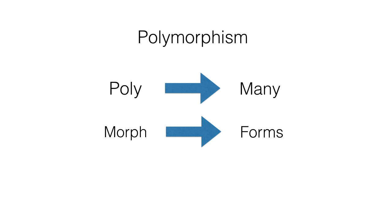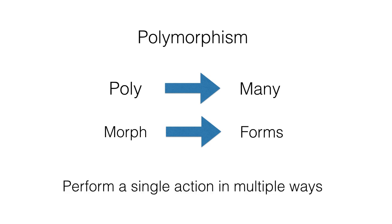A lady plays multiple roles: the role of a mother, a wife, a friend, a sister, etc. She reacts differently based on the role she is playing. In Java, polymorphism means to perform a single action in multiple ways.